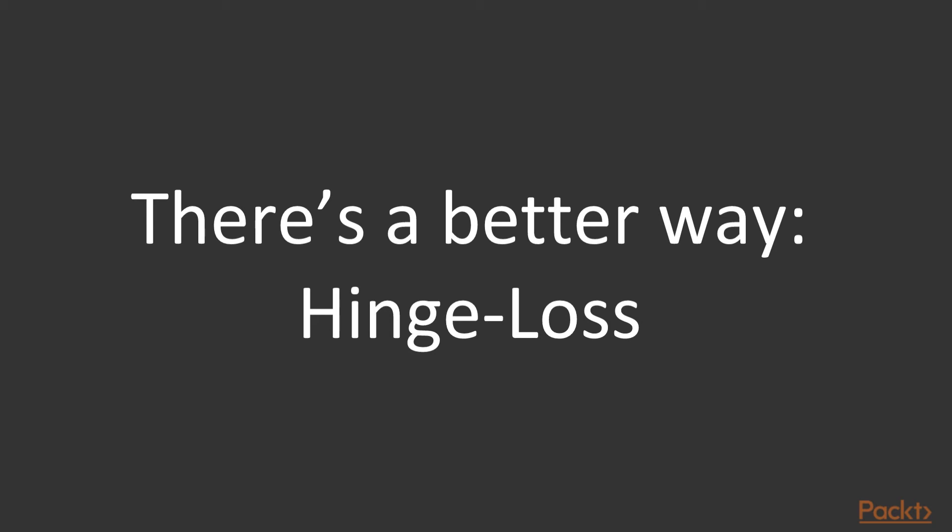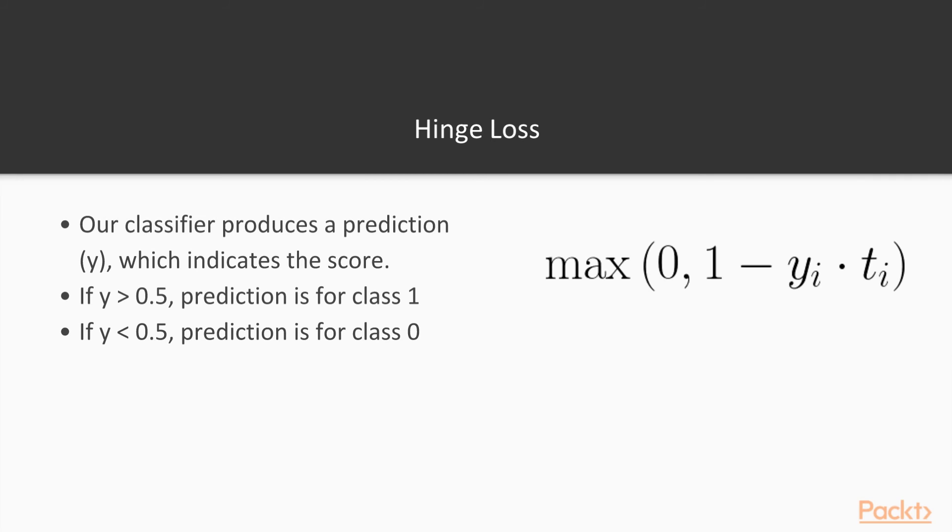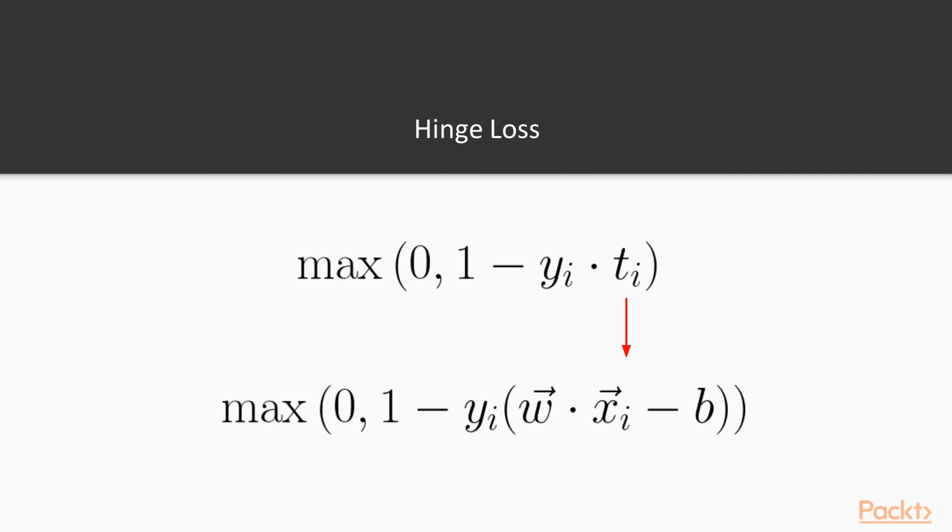It would be much better if we could give a smaller error to the just near misses and a larger error to the large misses. And this is what we are going to do with something called hinge loss. So what hinge loss is defined as, it is the max of zero and the expression one minus y of i times t. So y of i is the label and t is the prediction that our classifier produces. If we look at t and expand that to the max margin line, we get the expression the max of zero and the expression one minus y of i times w dotted with x minus b, which is our classification, our SVM expression.